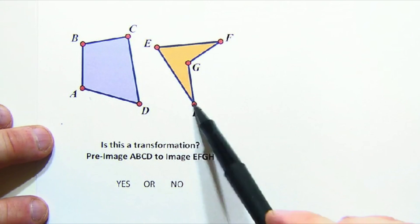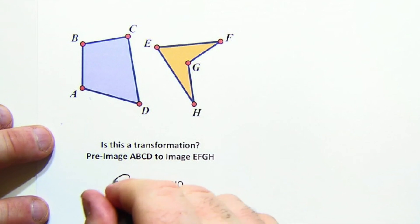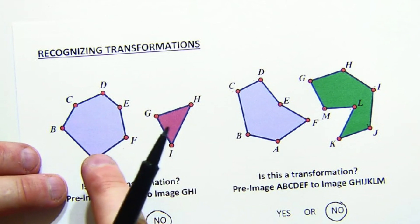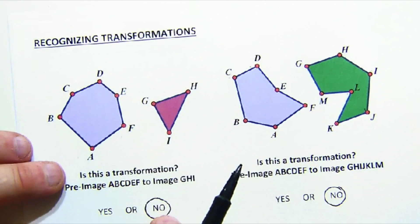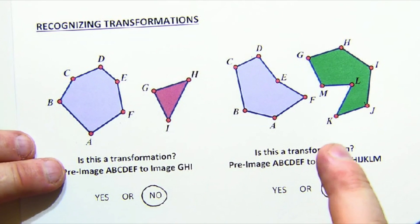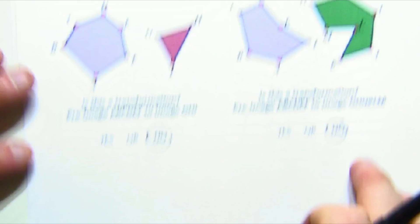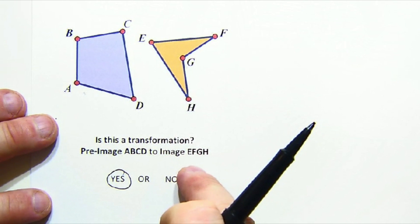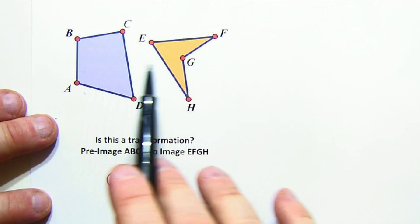One, two, three, four points. One, two, three, four points. Yes. So this is a mapping of this going to this, but it's not a transformation. This is not a mapping and not a transformation. And this is a mapping and it's also a transformation because it's a one-to-one mapping.